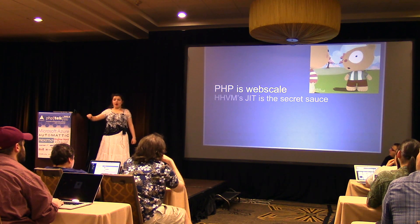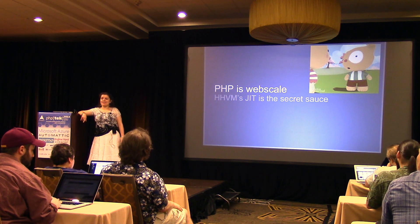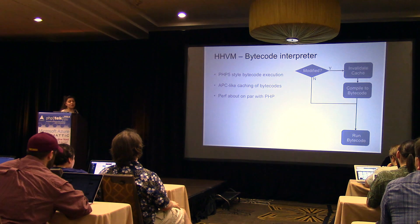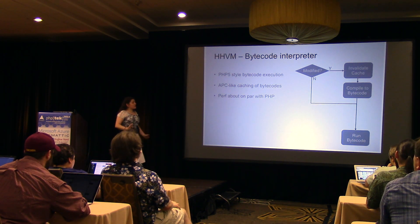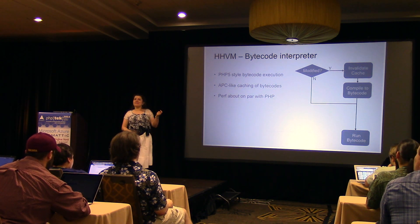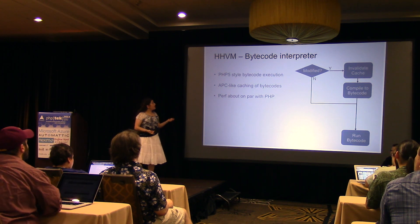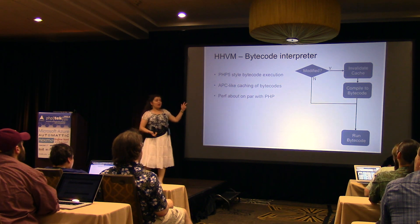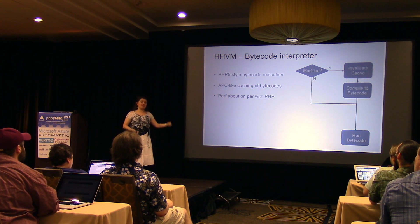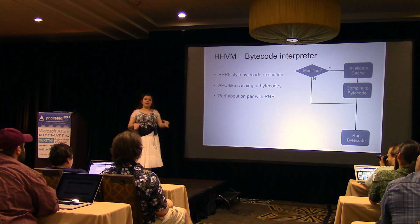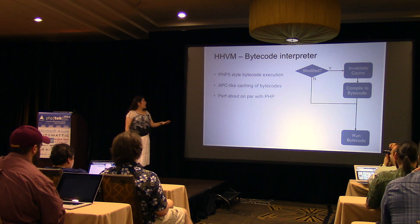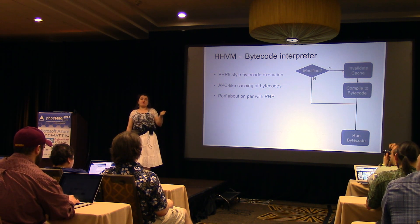The number one thing people want to hear about HHVM is why — everybody says it's fast. So what makes it fast? There are two modes. The first is the bytecode interpreter: it works exactly the same way PHP does — compile to bytecode and run the bytecode. The bytecodes are formatted differently from Zend, but it's the same concept: parse a file, put it into bytecode, run it. The performance for this is about on par with PHP with APC. You're not going to get a big burst of speed just by running it.